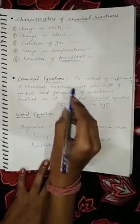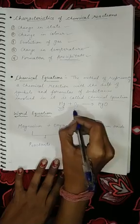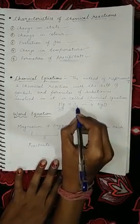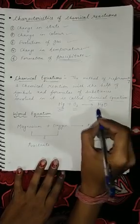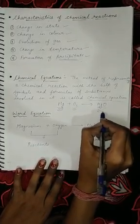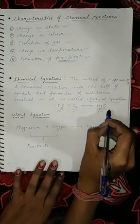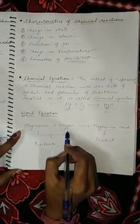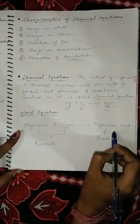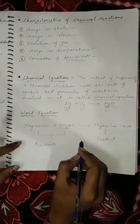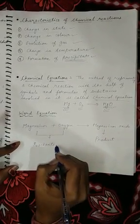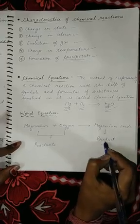When we write it as a chemical equation, we use the symbol of magnesium (Mg), the symbol of oxygen (O₂) — we always write oxygen as O₂ — and the symbol for magnesium oxide is MgO. In the word equation, magnesium and oxygen are reactants and magnesium oxide is the product.